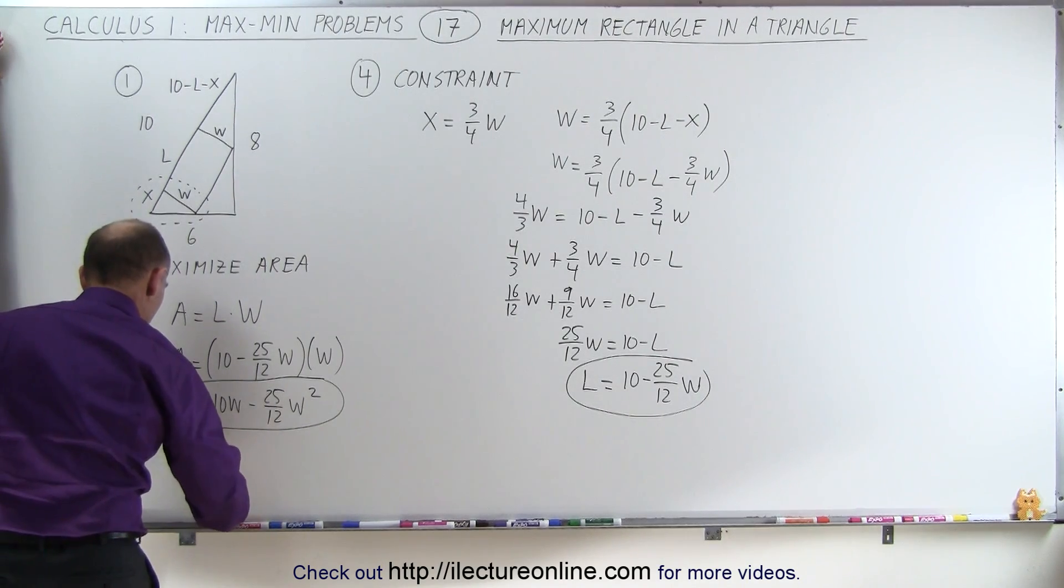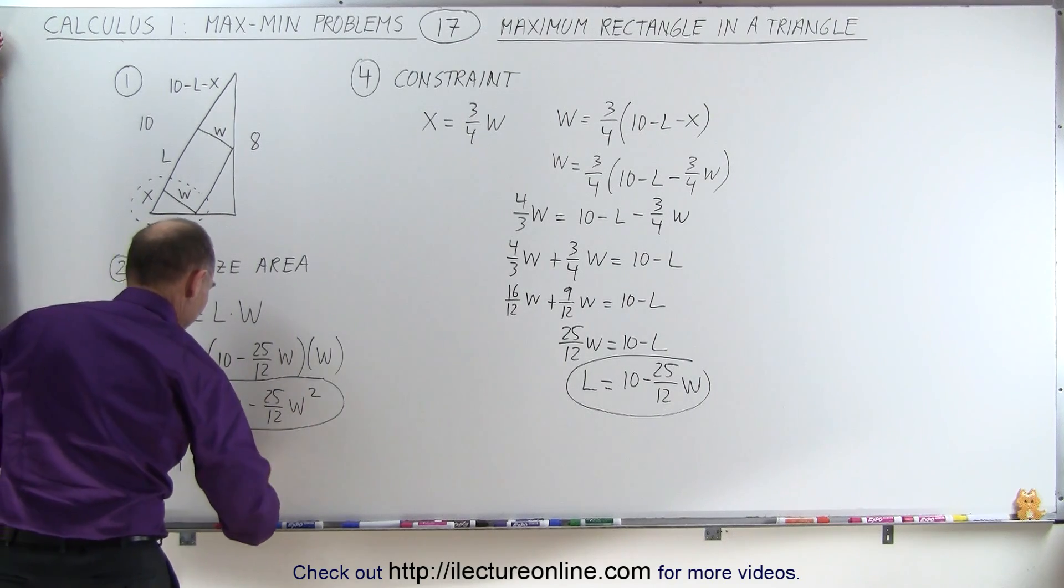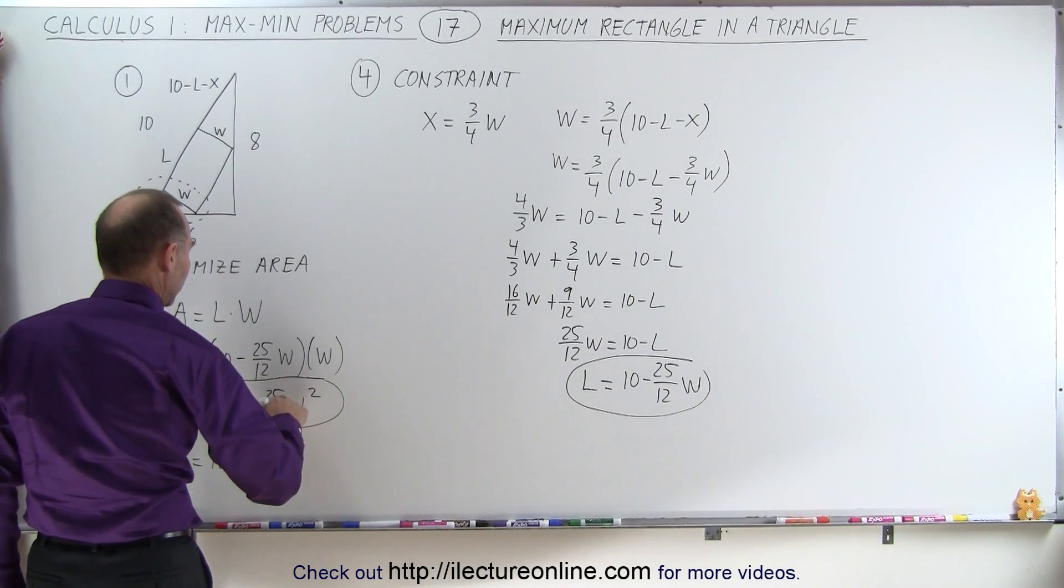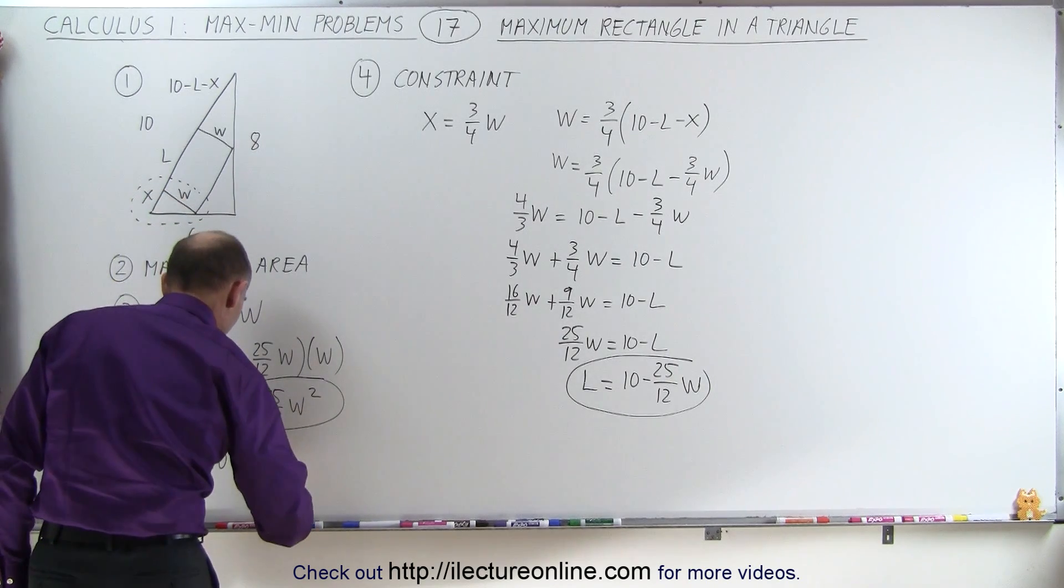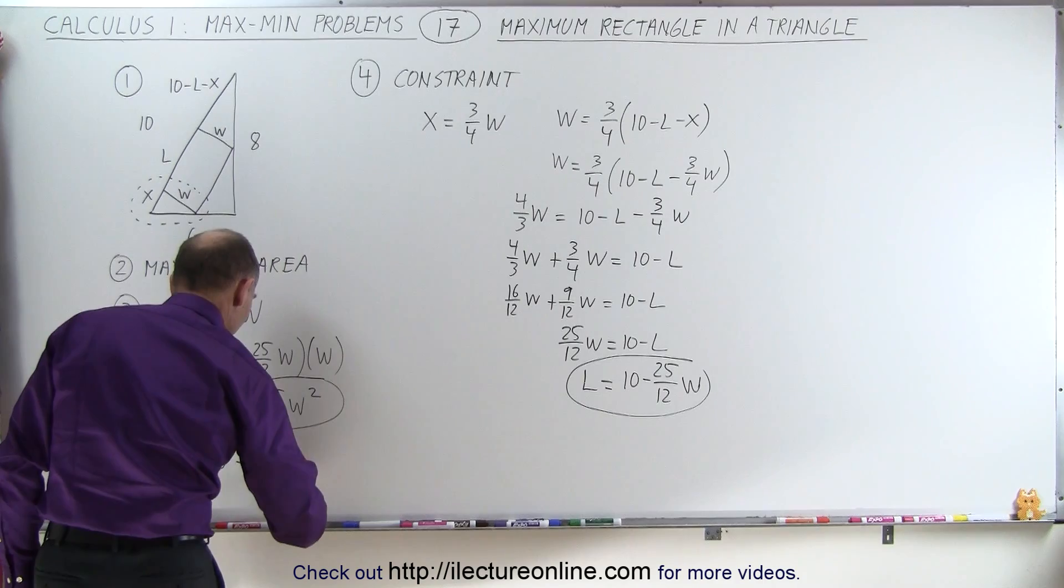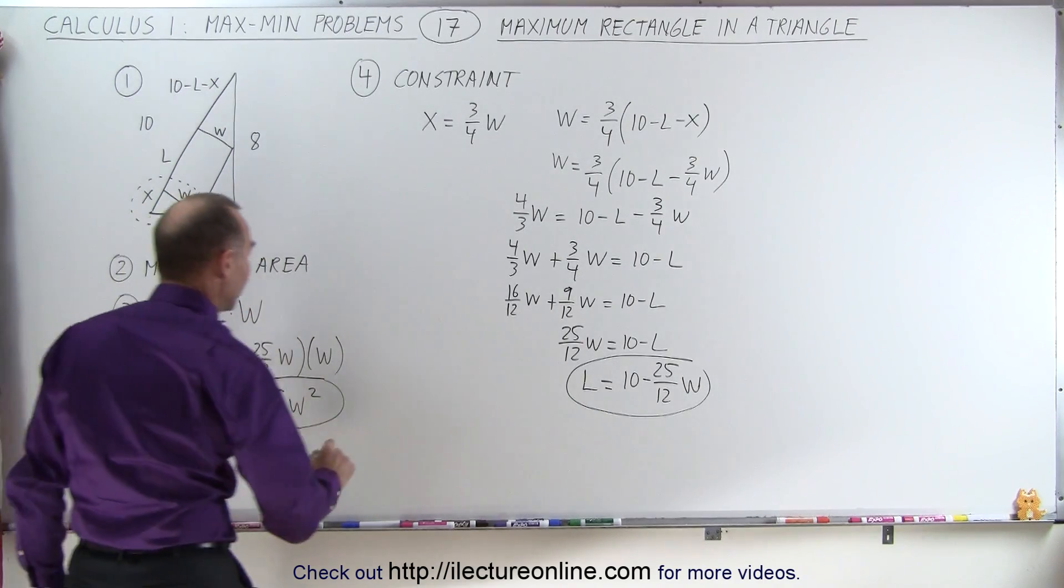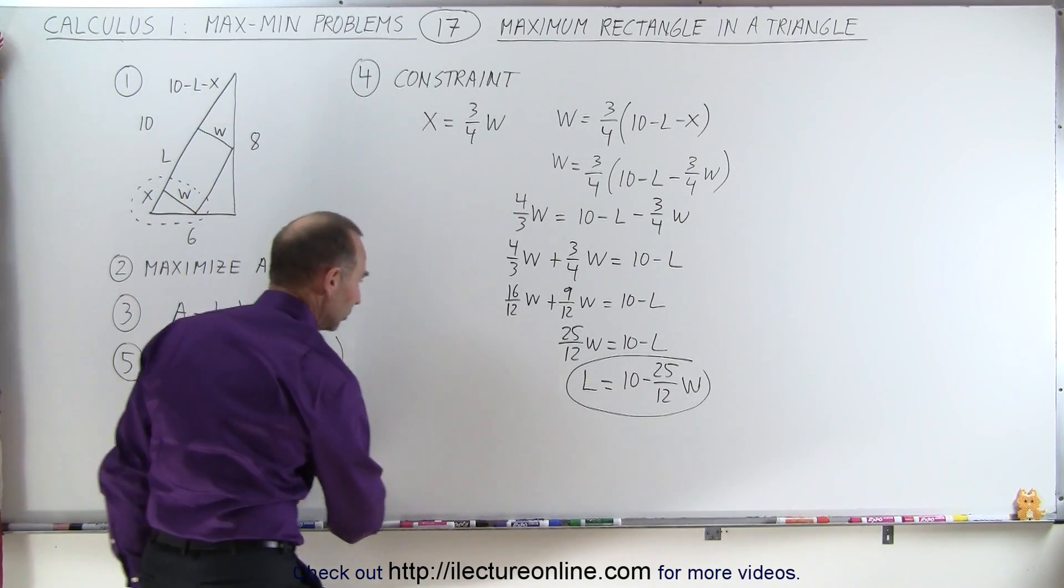So A prime is going to be 10 minus 2 times 25 is 50 divided by 12 can be written as 25 divided by 6. So 25 divided by 6 W. And then we're going to set, and oh, I'm running out of room here.